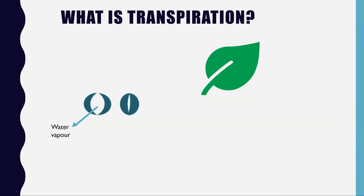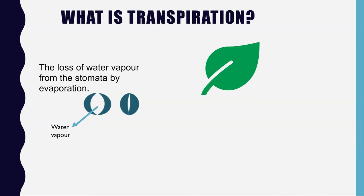Transpiration is a concept you would have learned at GCSE. It is the loss of water vapour from the stomata by evaporation. Here we see two guard cells which are turgid and therefore bent, creating a stoma or pore where water vapour can evaporate out. These are mainly found on the leaf, in particular the lower side of the leaf.